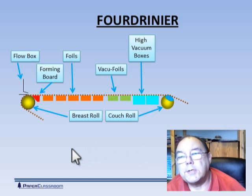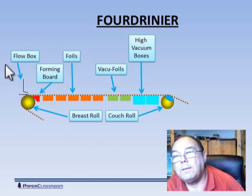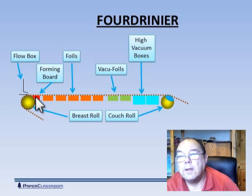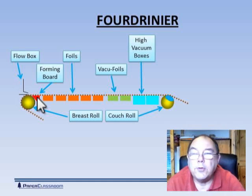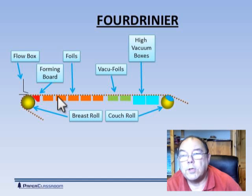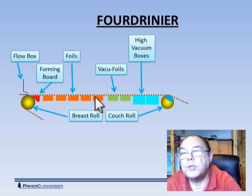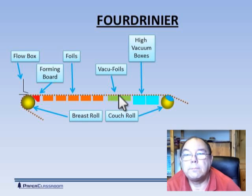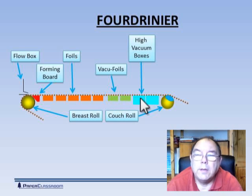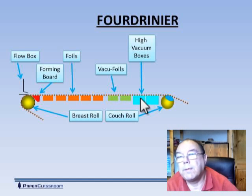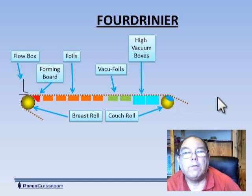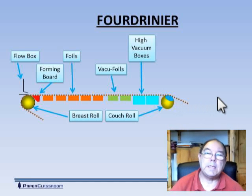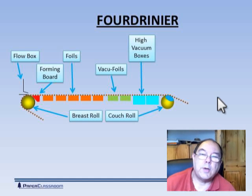The principles are still the same. Here we have a breast roll supporting the wire. The stock flows out of the flow box onto the wire. There's a forming board there initially to inhibit the drainage of the stock. As it moves along, in those days there would be table rolls — today there are foils to help drain the water. Then we have vacuum foils, and then high vacuum boxes linked to vacuum pumps. Then over the couch roll and off into the press section. So that's a modern version of the piece of equipment developed just outside Hemel Hempstead.